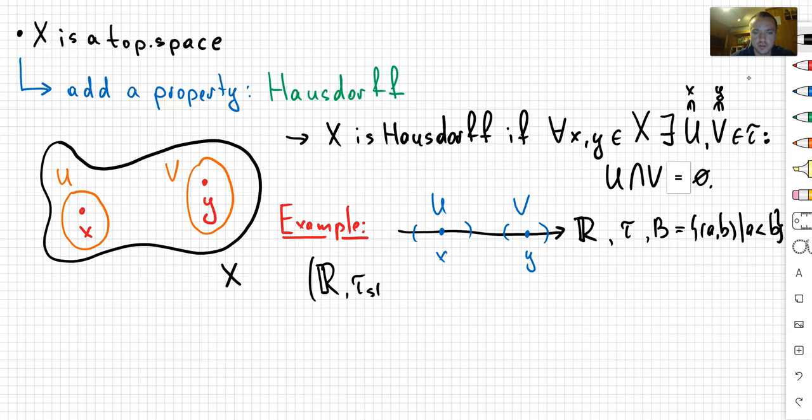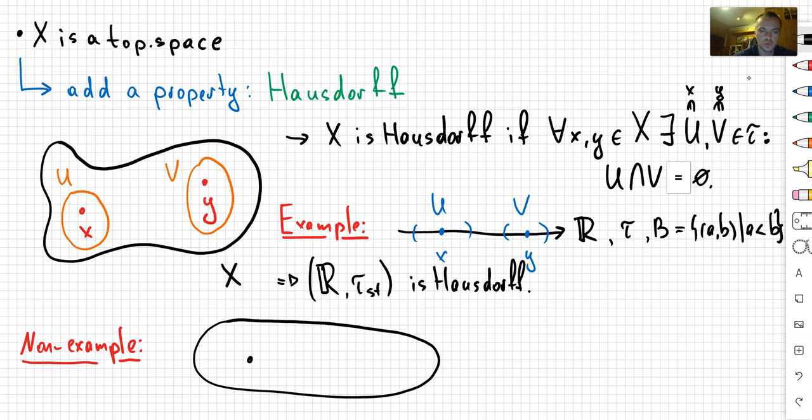Okay, and let's show a non-example. So the non-example is going to be a really interesting set. It's going to be a set that contains just three points. So we're going to have point 1, point 2, and point 3.